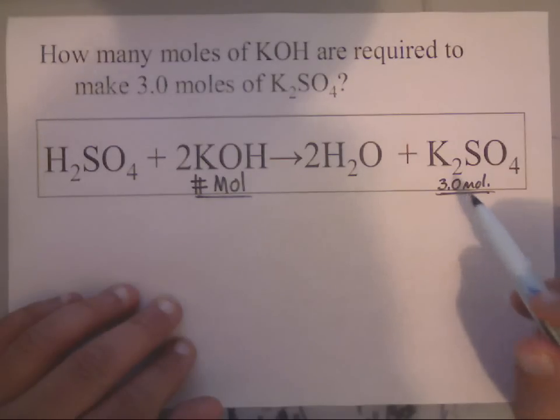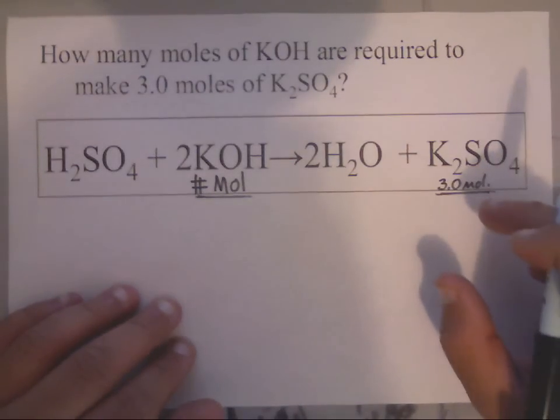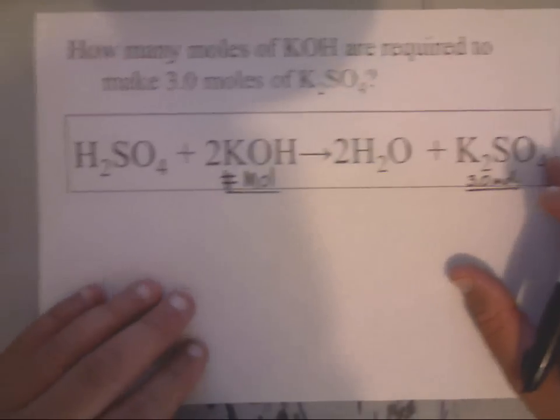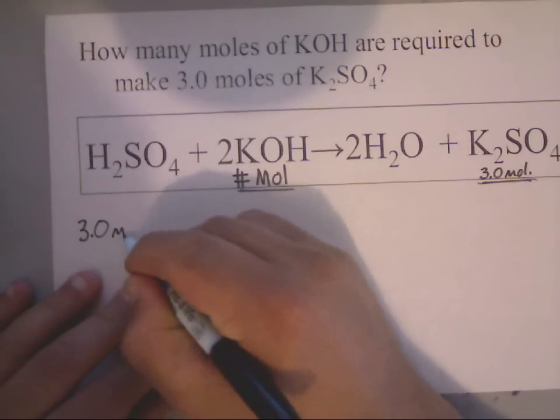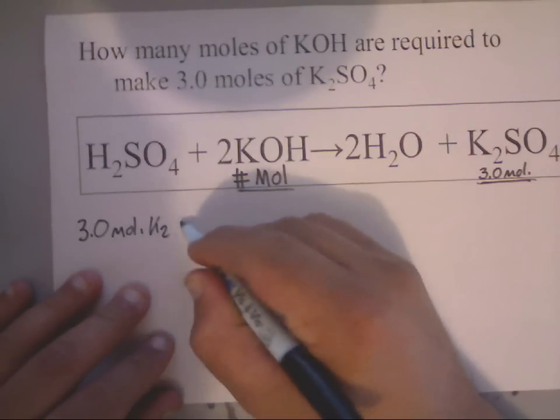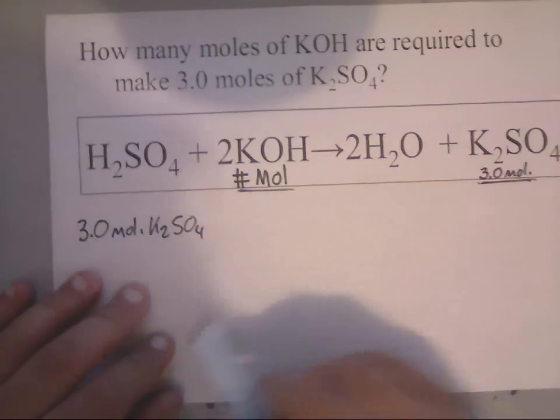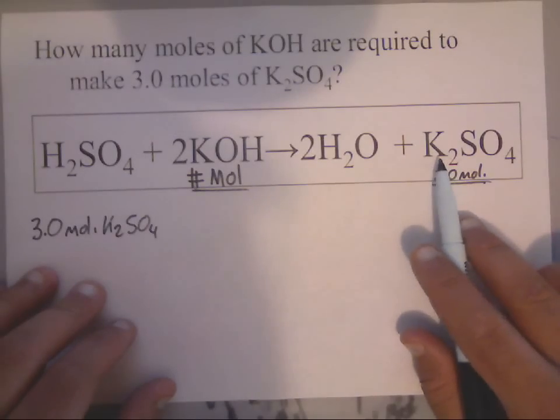I'm given a question, what they want me to find, and I'm given a number for my true given. Now, like I've stated in the past, you will always take your given and put it over 1. So, you will write down 3.0 moles of K₂SO₄. That is your given.